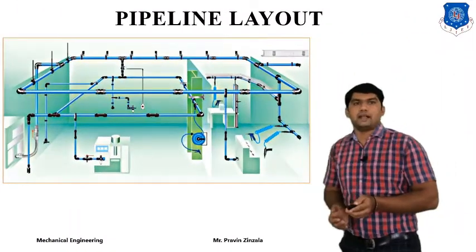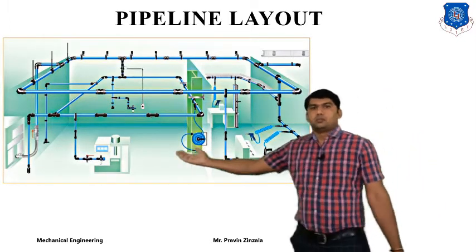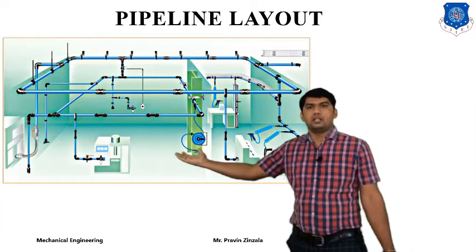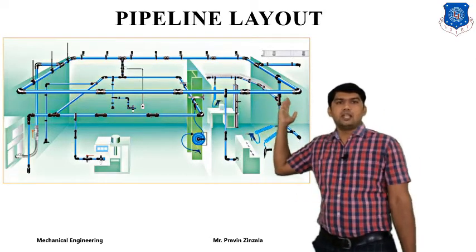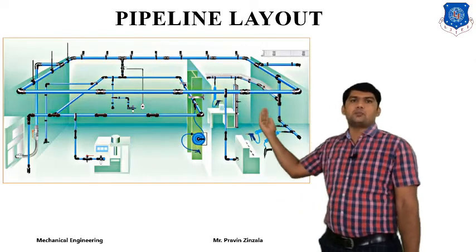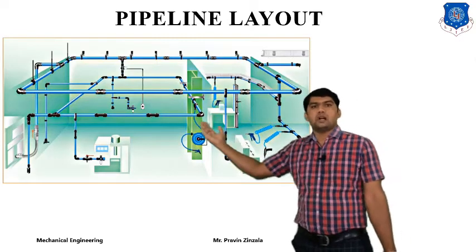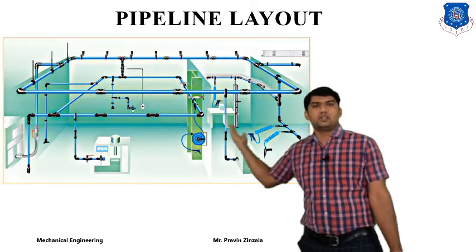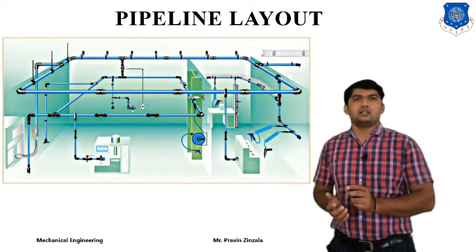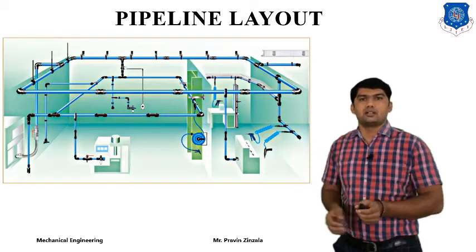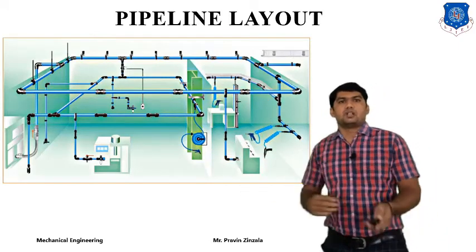Now we will take different examples of pipeline layout. The first example is a service unit. The first compartment is the compressor unit or any type of generating unit. It supplies pressurized fluid to the main pipeline of the industry. Then the sub-pipeline supplies sub-units, and from the sub-pipeline the fluid passes to different compartments — for service units, for repairing, or for particular industrial applications. Generally in a hydraulic and pneumatic pipeline layout, we have the main pipe, then the sub-pipe, then fluid passes to different compartments.